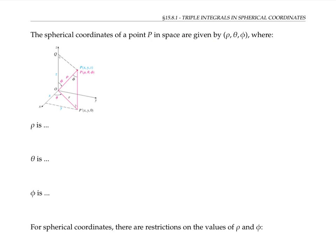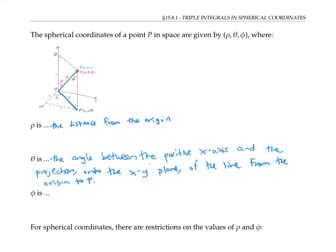The spherical coordinates for a point P in three dimensional space are given by three numbers: rho, theta, and phi. Rho gives the distance of the point from the origin — in other words, rho is the length of the line segment connecting the origin to the point. If we project that line segment onto the XY plane, then theta gives the angle between the positive x-axis and that projected line segment. One way to think of theta: it's the same theta as in polar coordinates for the point projected onto the XY plane.